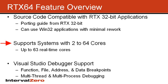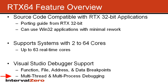RTX 64 supports from 2 to 64 cores, which means you can have up to 63 real-time cores, truly leveraging the multi-core architectures from Intel and AMD. For debugging, we support Visual Studio. Under RTX 64 we have file, function, address, as well as data breakpoints. You can fully do multi-thread and multi-process debugging within Visual Studio for all of your real-time as well as non-real-time needs.